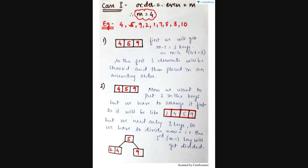Here I have taken order equal to even, m equal to 4, and the example is 4, 5, 9, 2, 1, 7, 8, 3, 10. So here m equal to 4. We have to follow the rule m-1 keys, so 4-1 equal to 3 keys. After getting these 3 keys, we have to choose the first 3 elements to place in the node.